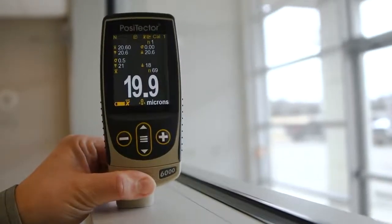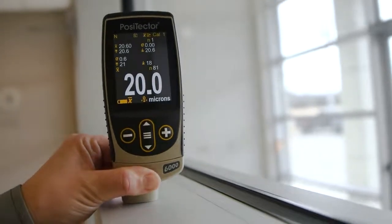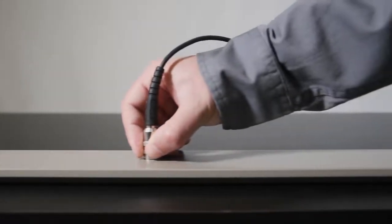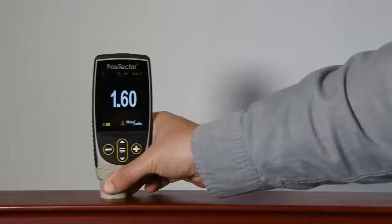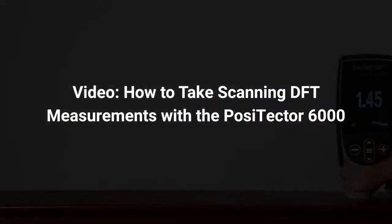Scan modes can be used to quickly collect measurement data by continuously taking measurements, and can be used with any PosiTector 6000 probe when connected to an advanced gauge body. Learn how to take up to 180 plus readings per minute in the How to Take Scanning DFT Measurements with the PosiTector 6000 video. Find the link in the description.